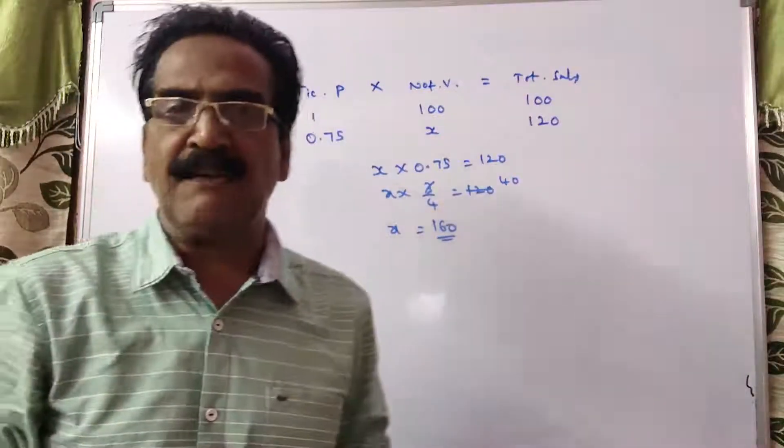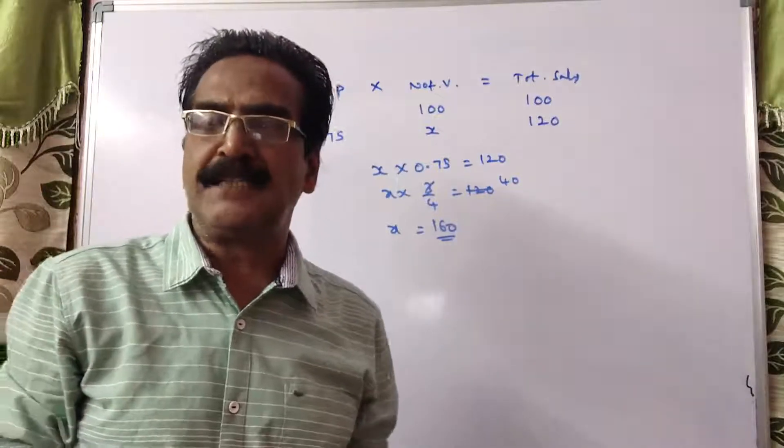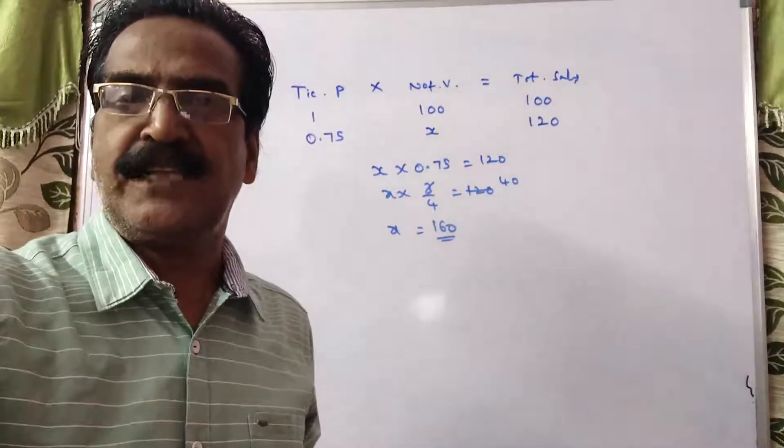So, the present number of visitors is 160. Earlier, it was 100. Now, it is 160. So, the increase of 60 is equal to 60 percent. Okay, friends. Thank you. Have a nice day.